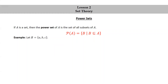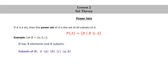Let's look at another example. Let capital B be the set consisting of little a, little b, and little c. B has three elements and eight subsets. The subsets of capital B are the empty set, set a, set b, set c, the set consisting of a and b, the set consisting of a and c, the set consisting of b and c, and finally the set itself consisting of a, b, and c.